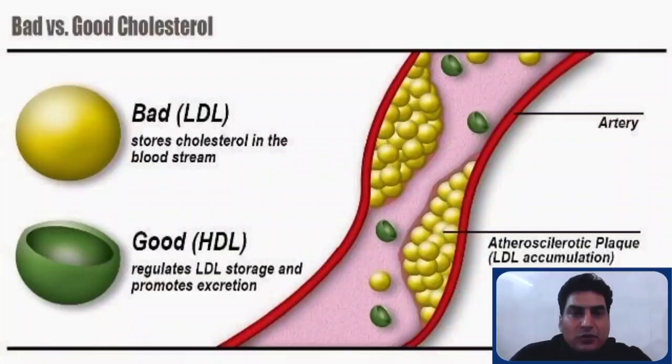Lipoprotein — the inner core is made by lipid and the outer part is made by protein, so it becomes soluble in blood. Two types of lipoprotein are important. One is LDL, which is called low-density lipoprotein or bad cholesterol.